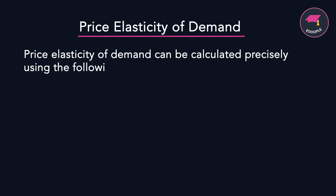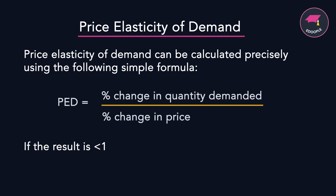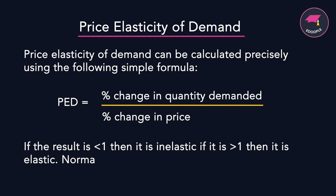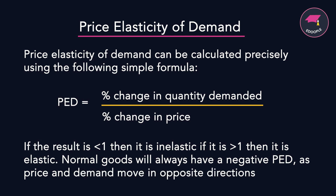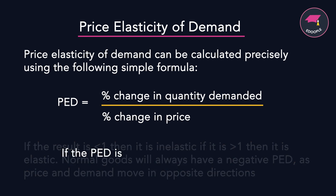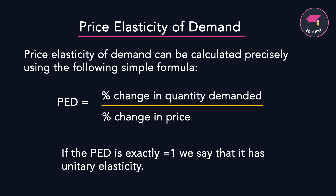Price elasticity of demand can be calculated precisely using the formula: PED equals the percentage change in quantity demanded divided by the percentage change in price. If the result is less than 1 it's inelastic; if it's greater than 1 then it's elastic. Normal goods will always have a negative PED as price and demand move in opposite directions. If the PED is exactly equal to 1 then we say it has unitary elasticity.